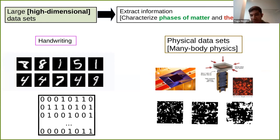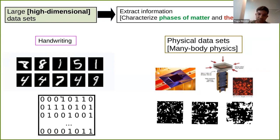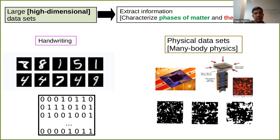The question is: can we extract information from this raw dataset in such a way that, in our physics context, we can characterize phases of matter or phase transitions? Of course you can compute physical observables like magnetization, but the idea here is to try to characterize the dataset as a whole. An important aspect is that a generic dataset has a structure.